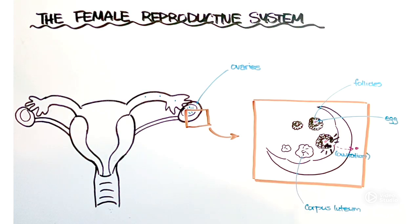But of course if fertilization doesn't happen and nothing implants into that endometrial lining, the corpus luteum will eventually break down. It will stop secreting the hormones that maintain this lining and then at the end of the cycle the lining will be shed.